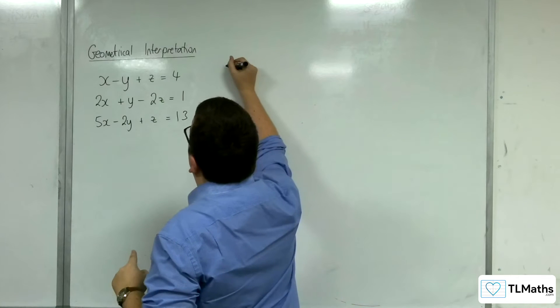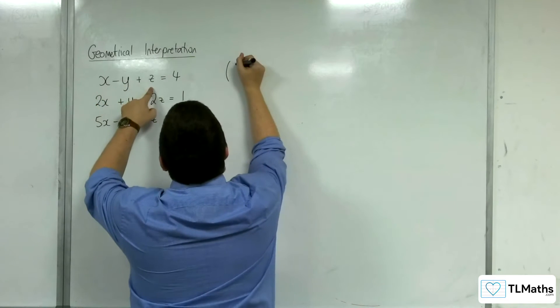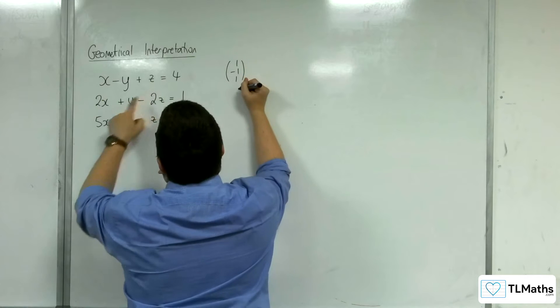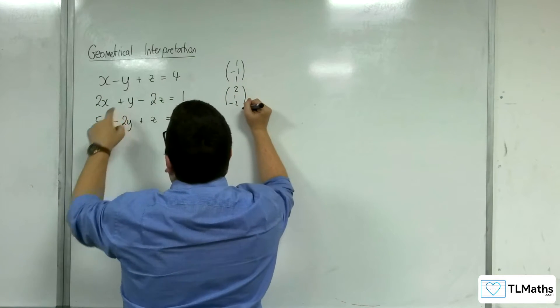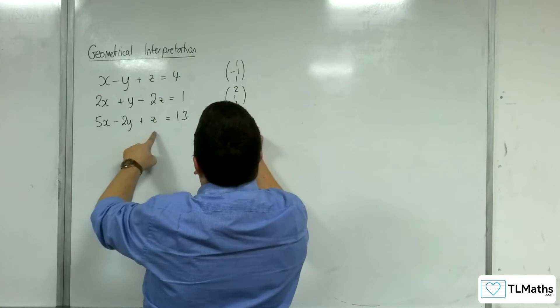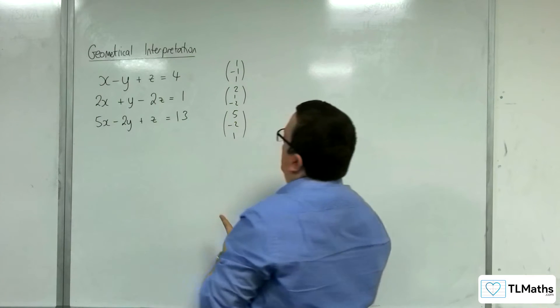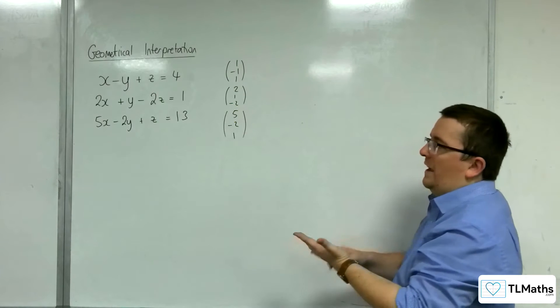So for this first one, the normal vector is 1, minus 1, 1. And the second one, you've got 2, 1, minus 2. And for the third one, you've got 5, minus 2, 1. It's built by the coefficients of the x, y, z.